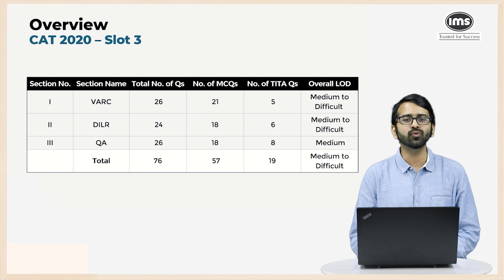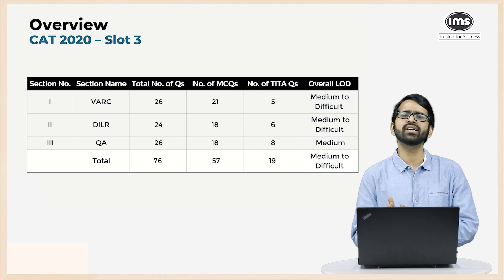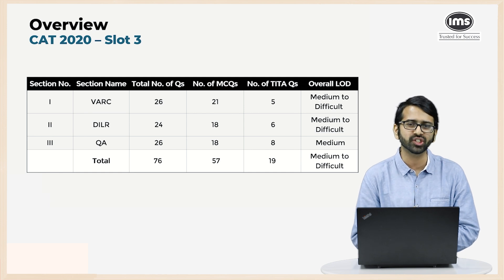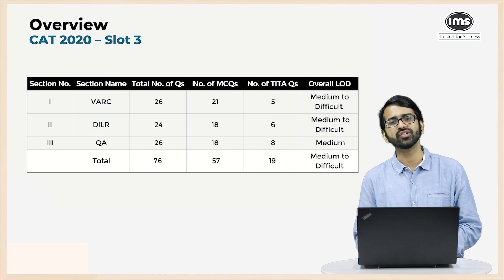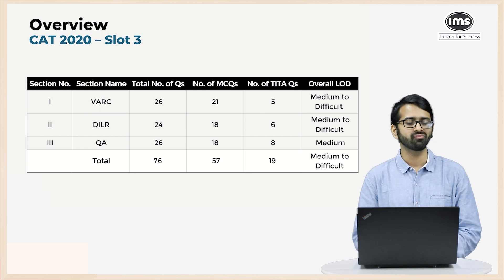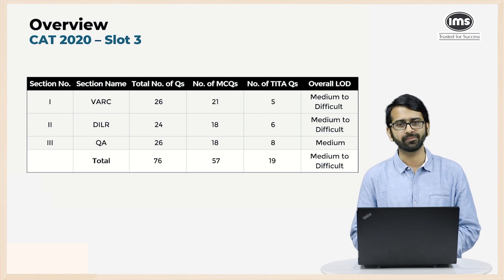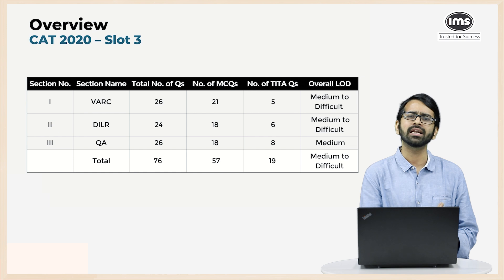In terms of the overview of the examination, the Verbal Ability and Reading Comprehension section was of medium to difficult level. It had a total of 26 questions, out of which 21 questions were MCQ type and 5 were TITA type, which stands for Type In The Answer. DILR had a total of 24 questions, 18 of which were MCQs and 6 were TITA. DILR, as has been the case in the last few years in CAT, was the make-or-break section and was felt to be difficult this year.